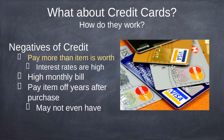The negatives of the credit card: you pay more than what it's worth. That $2,000 refrigerator may actually equal $4,000 by the time you pay off your credit card bill because of all the fees and interest. Interest rates are high, meaning they charge you fees every month that keep growing. You can have a high monthly bill. And here's the other thing — you can pay an item off years after purchase and not even have it anymore. If it takes 10 years to pay off that refrigerator and it breaks in year eight, you're still paying for it but you no longer have it.